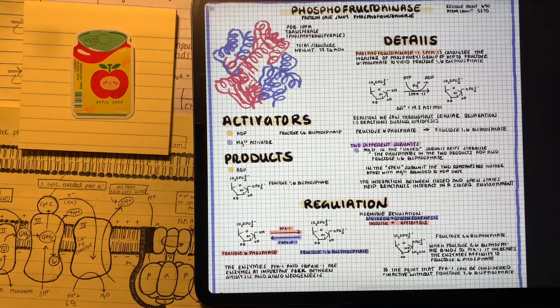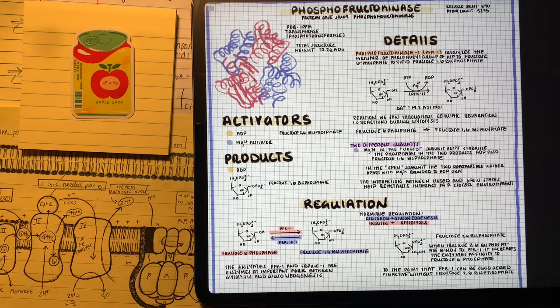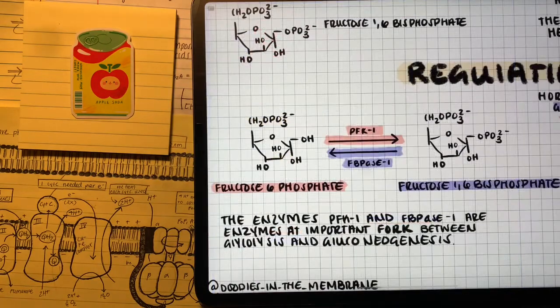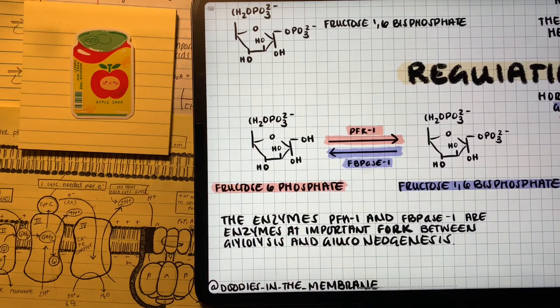First of all, fructose 2,6-bisphosphate. I know it sounds familiar, but fructose 2,6-bisphosphate encourages phosphofructokinase to perform its reaction by binding to it. Also, the hormone insulin increases the activity of phosphofructokinase.